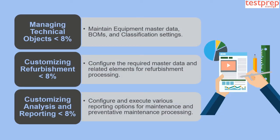Domain 7 is Managing Technical Objects, comprising less than 8 percent of the exam, covering equipment master data, BOMs, and classification settings. Domain 8 is Customizing Refurbishment, less than 8 percent, covering master data and related elements for refurbishment processing. Domain 9 is Customizing Analysis and Reporting, less than 8 percent, covering various reporting options for maintenance and preventive maintenance.